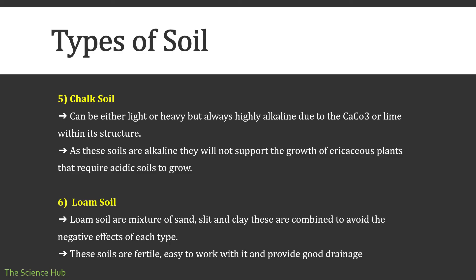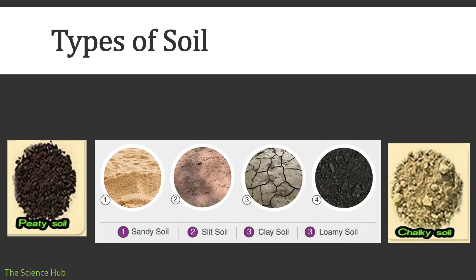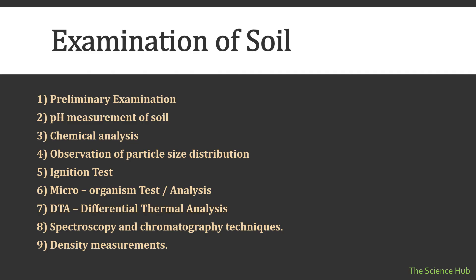Then comes loam soil. Loam soils are a mixture of sand, silt, and clay, combined to avoid the negative effects of each type. These soils are fertile, easy to work with, and provide good drainage. Here are images of each type of soil, which includes peat soil, sandy soil, silt soil, clay soil, loamy soil, and chalky soil.